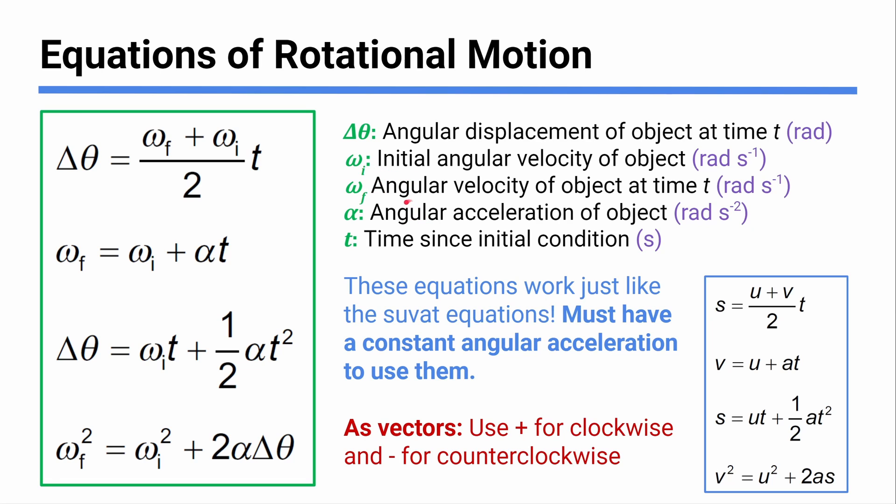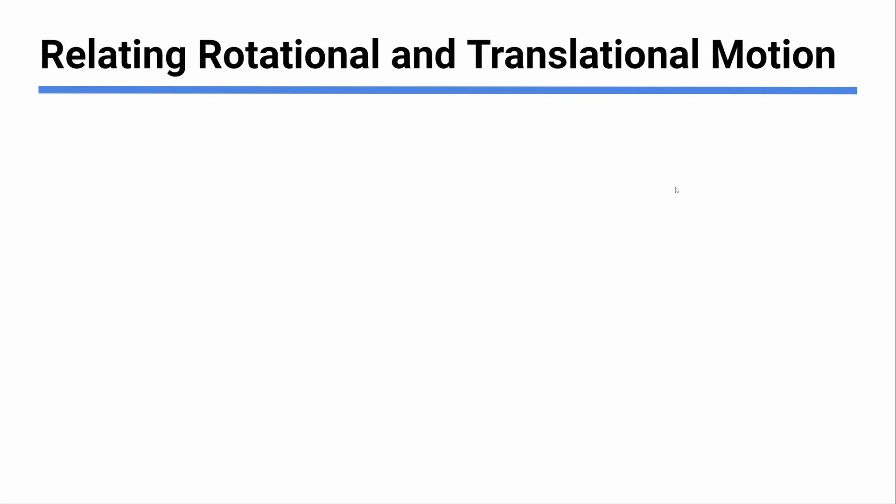We're going to use vector notation, so we need to think about positive and negative signs. The IB isn't going to get deeply into the three-dimensional vector rules, so a good approach is to just keep track of clockwise or counterclockwise. You're free to choose which direction is positive — I think of clockwise as positive and counterclockwise as negative. So a clockwise rotation gives a positive angular velocity, and counterclockwise gives a negative one.